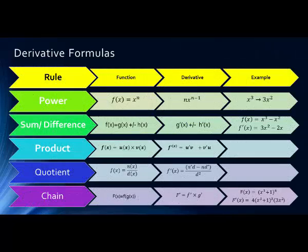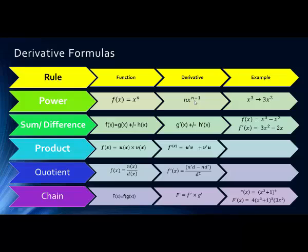The first rule we learned was the Power Rule. This is when we have a function that's a variable raised to a power. We bring the exponent down in front as a multiplier, and the new exponent is simply one less. For example, the derivative of x cubed is 3x squared — the exponent comes down in front as a multiplier and the new exponent is one less.